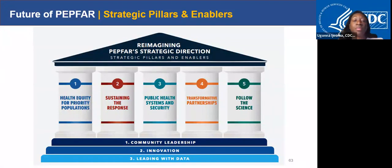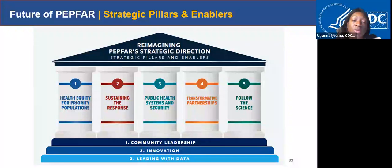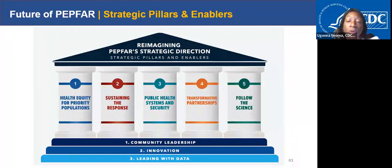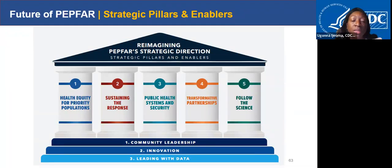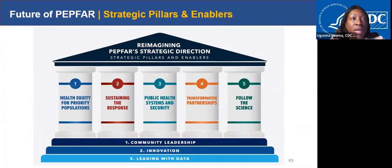Looking to the future: with the new PEPFAR ambassador, Dr. John Nkengason, we have launched a new 3x5 strategy to sustain PEPFAR gains. Pillar one focuses on equity for priority populations, which includes KPs — a core part of our strategy moving forward. Other pillars include sustaining the response, securing public health systems and security, maintaining transformative partnerships, and following the science. The first enabler of these pillars is community leadership. The 3x5 strategy is the cornerstone of the new PEPFAR five-year strategy, launched in July 2022 at the AIDS 2022 conference.